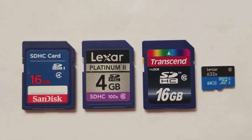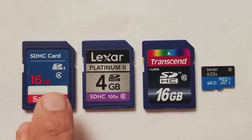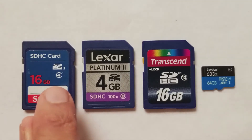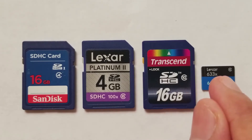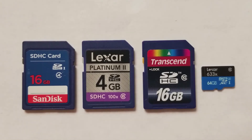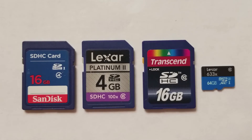Class is denoted by a 'C' with a number inside it. We have Class 2, Class 4, Class 6, and Class 10. Their respective minimum writing speeds are 2 MB/s, 4 MB/s, 6 MB/s, and 10 MB/s. If you need a card that supports high-speed writing, go with Class 10, which has a minimum writing speed of 10 MB/s. However, this Class system has also been replaced by a newer standard called UHS.